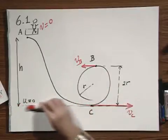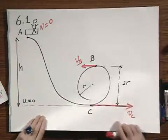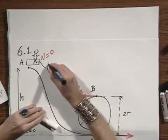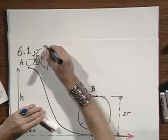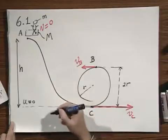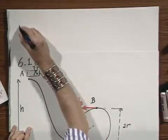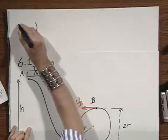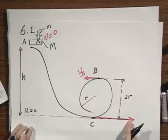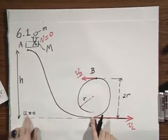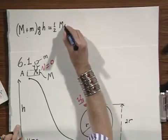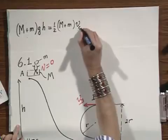We have arbitrarily chosen the gravitational potential energy to be zero at ground level, so that makes life a little easy. Let's call the mass of your roller coaster capital M and you with a modest mass little m. At point A there is no kinetic energy, only gravitational potential energy, so we have (M + m) times G times H. Then we arrive at C, where there is no gravitational potential energy, so we only have kinetic energy: one-half (M + m) times V at location C squared.